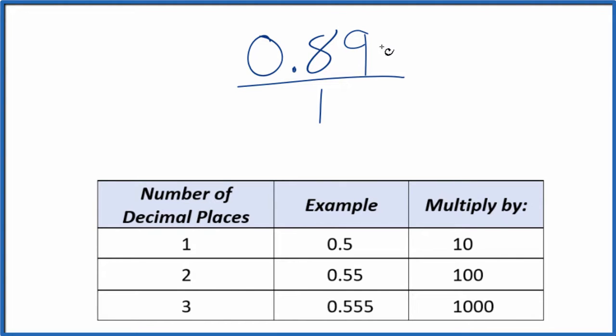And what we need to do is get 0.89 to be a whole number. I see we have one, two decimal places. With two decimal places, if we multiply this by 100, that'll give us our whole number.